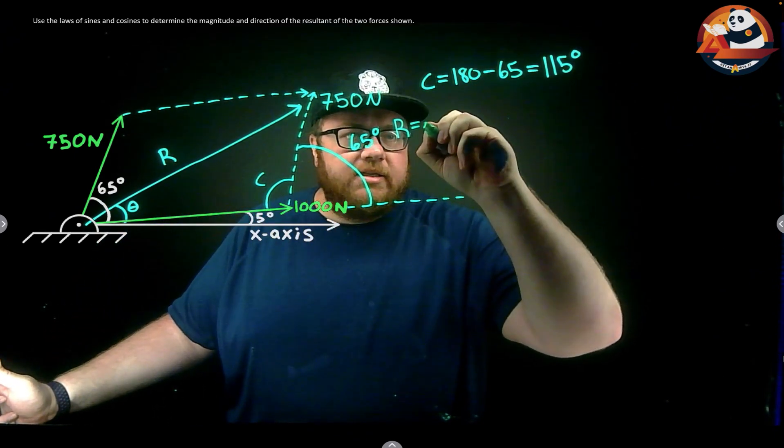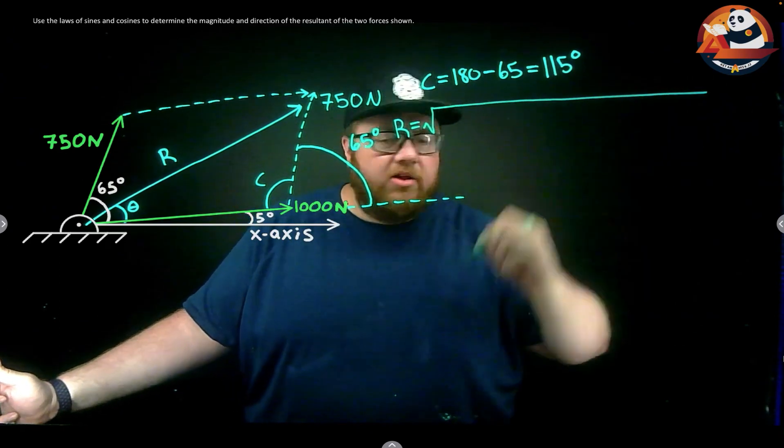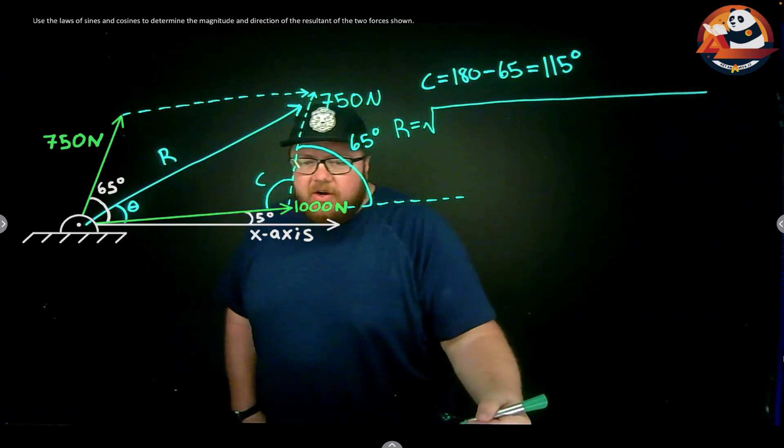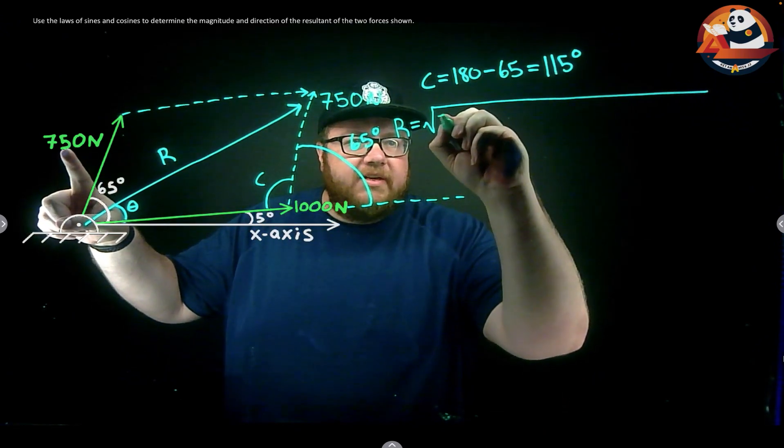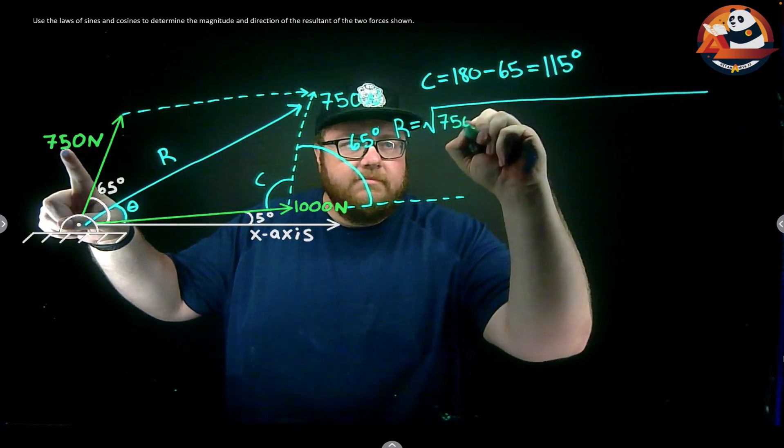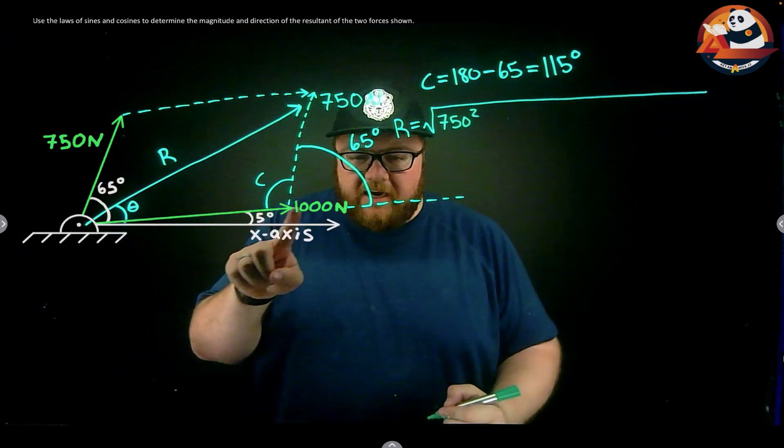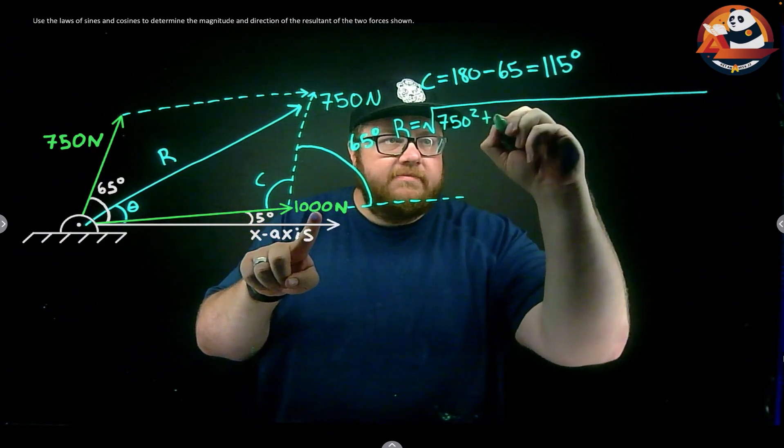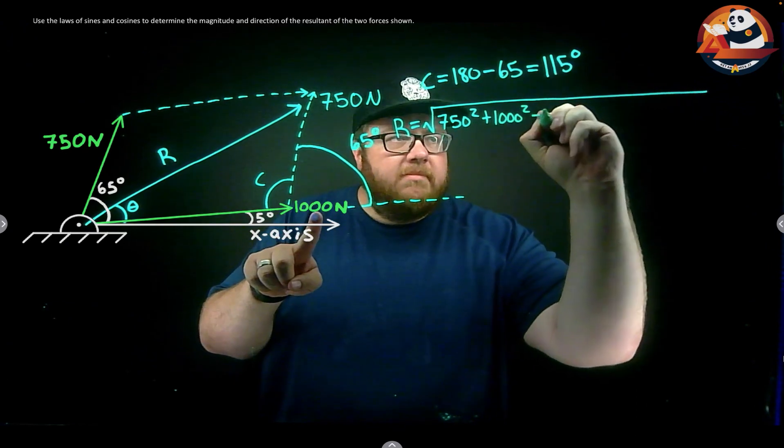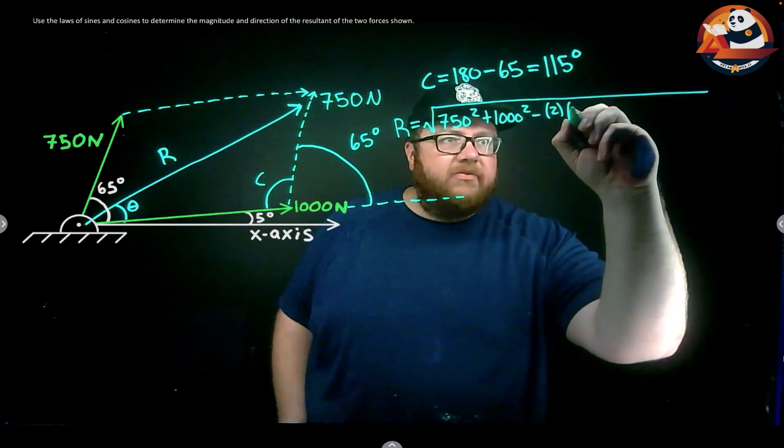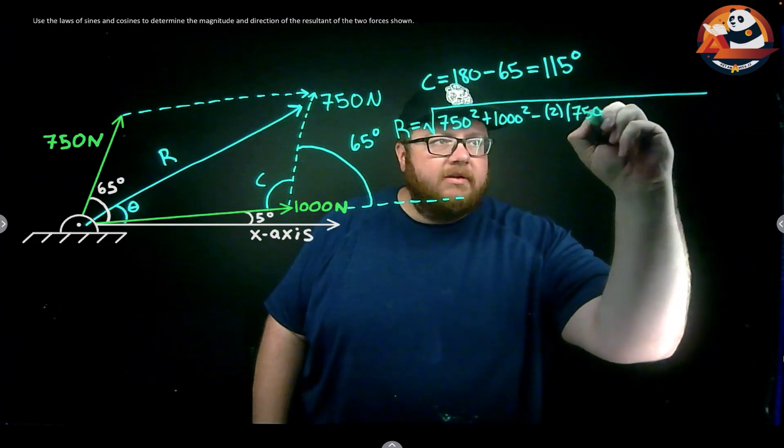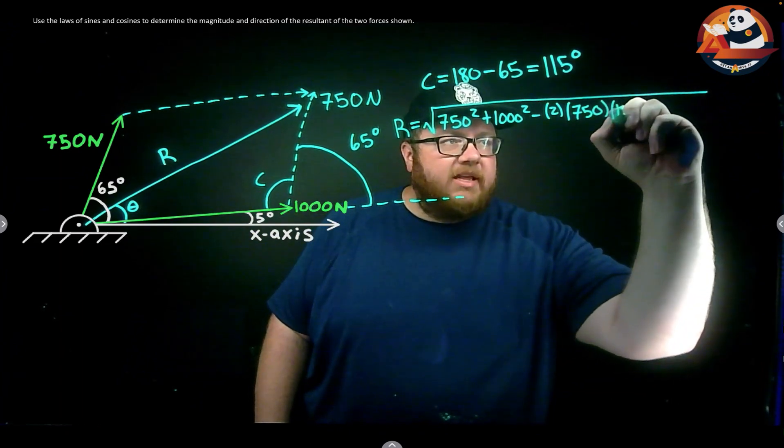Using the law of cosines, our equation should be the resultant's magnitude is the square root of one of our sides squared - doesn't matter which one we put in first - let's do 750 squared plus the second side, 1000 squared, minus two times one of our sides (750) times the second side (1000).